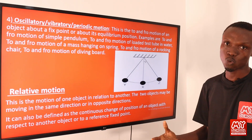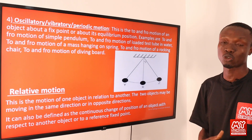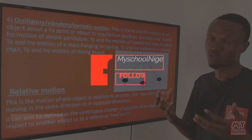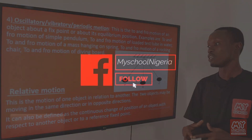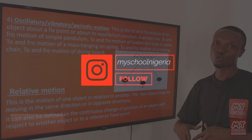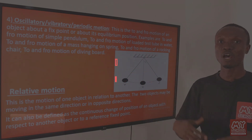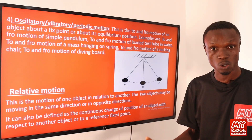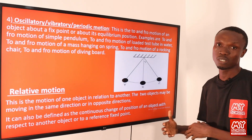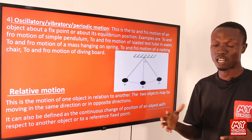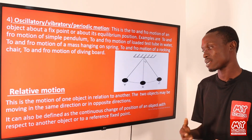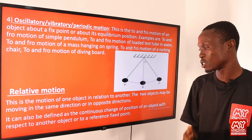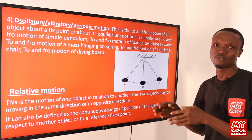Relative motion simply means the motion of an object in relation to another, where the two objects might be moving in the same direction or in opposite directions. We can also define relative motion as the continuous change of position of an object with respect to another object or to a reference point.